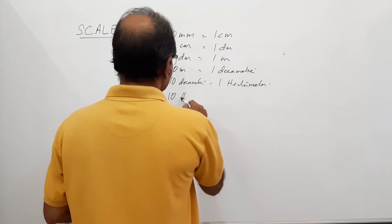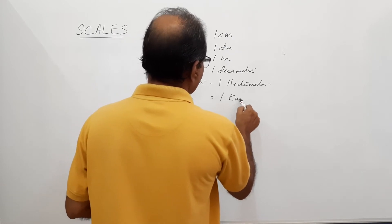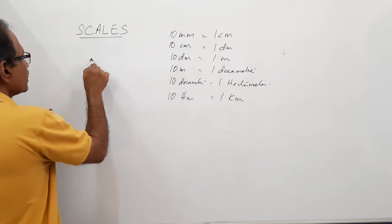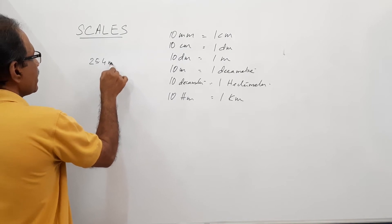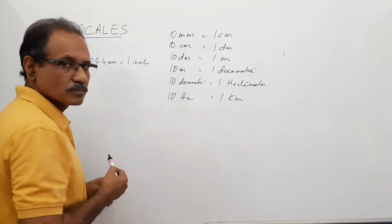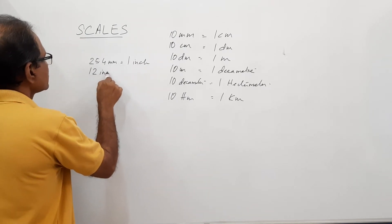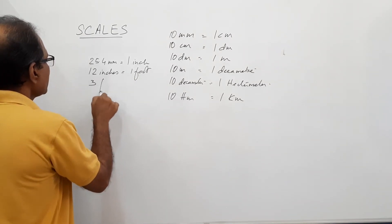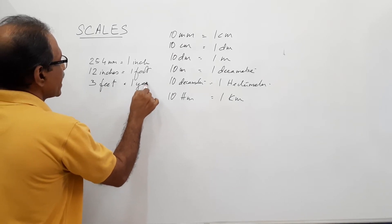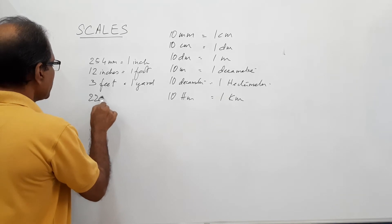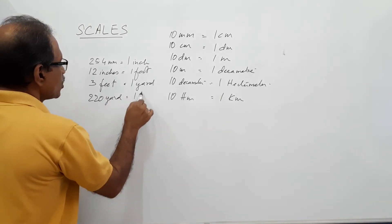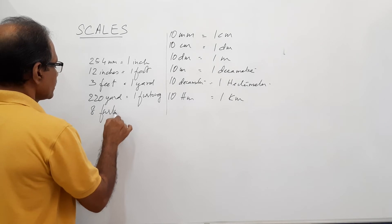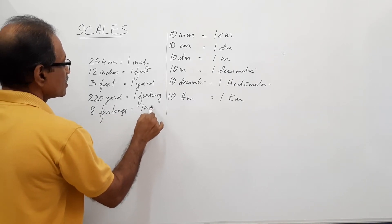Continuing the metric relationships: 10 decameters equals 1 hectameter; 10 hectameters equals 1 kilometer. For imperial units: 25.4 millimeters equals 1 inch; 12 inches equals 1 foot; 3 feet equals 1 yard; 220 yards equals 1 furlong.